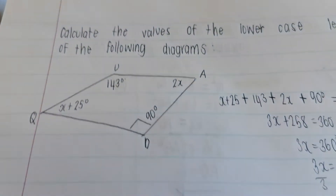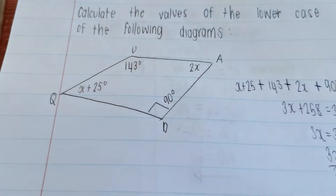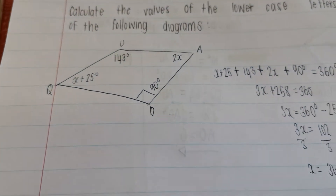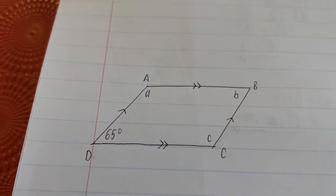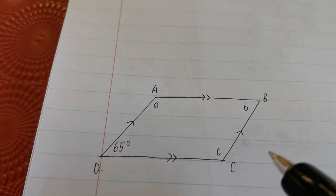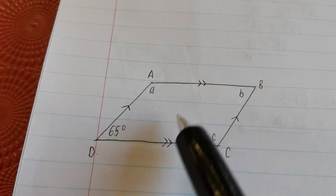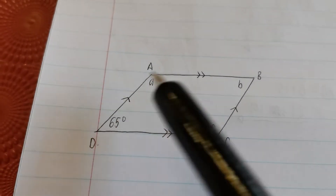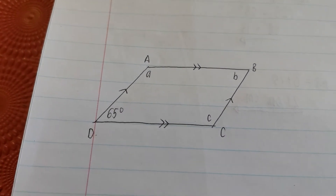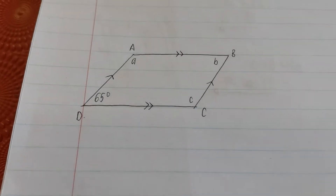Are there any more lowercase letters in this diagram? No, we just found X, so we're done with this question. Let's move on to the next one. What type of shape do we have? I can see that this line and this line are parallel to each other, and this line and this line are parallel, making this a parallelogram.